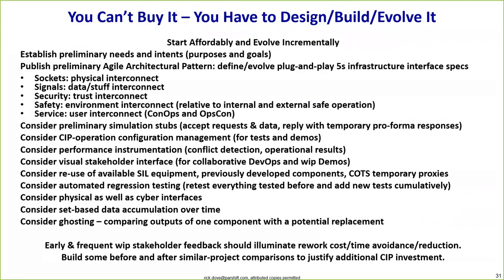Pick the low-hanging fruit first — the stuff that costs the least and gives the most demonstrable value so continued investment will be encouraged. What we're looking at is bringing up a capability that gives early and frequent work-in-process stakeholder feedback. That early feedback could very easily illuminate rework, cost, and time avoidance. If you're analytical in your approach, you can compare similar projects that start using a continuous integration platform with those that didn't, and show how much rework was reduced.